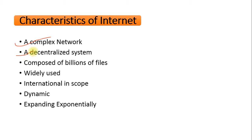The second characteristic is that the internet is a decentralized system. Decentralized means there are millions of individual networks and individual computers connected throughout the world. There is no single starting point or ending point on the internet. All computer systems connected to the internet are spread all over the world with different networks and different users.